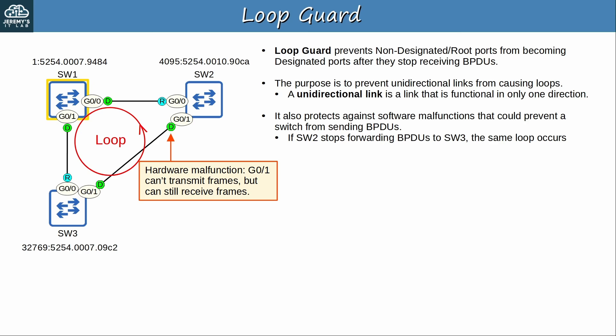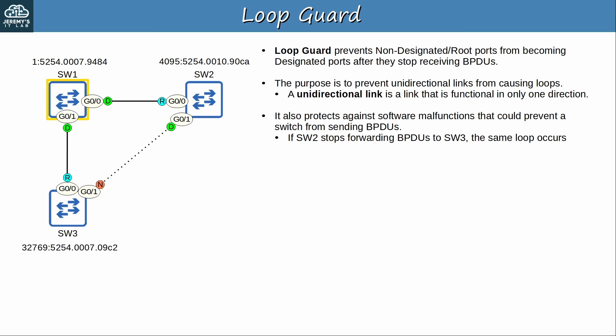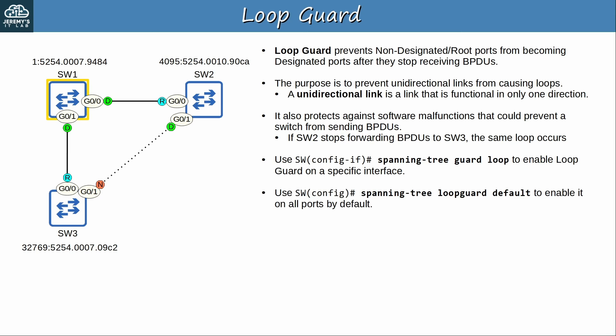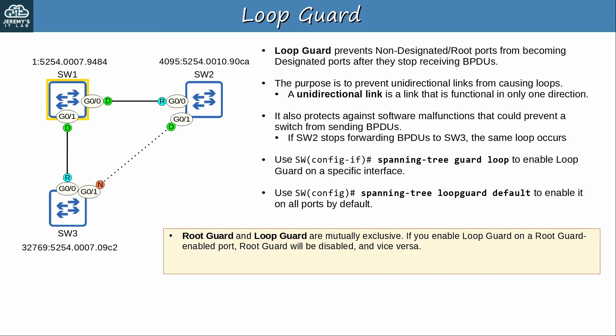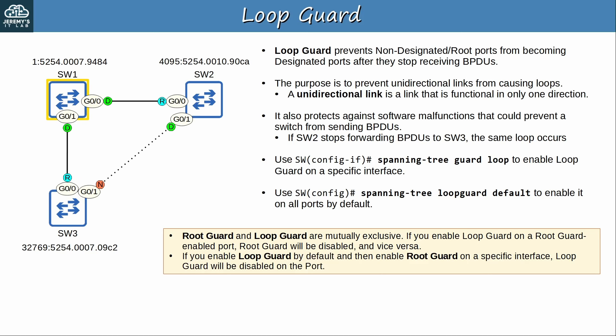We'll simulate that by activating BPDU filter on SW2. To enable LoopGuard, use 'spanning-tree guard loop' in interface config mode, or use 'spanning-tree loopguard default' to enable it on all ports by default. Importantly, RootGuard and LoopGuard are mutually exclusive. If you enable LoopGuard on a RootGuard-enabled port, RootGuard will be disabled, and vice versa. A port can only use one at a time. If you enable LoopGuard by default and then enable RootGuard on a specific port, LoopGuard will be disabled on that port.